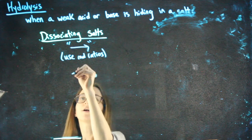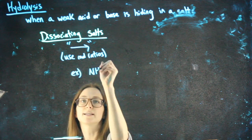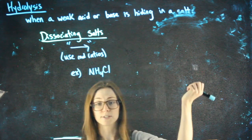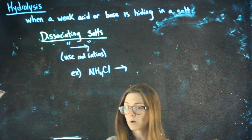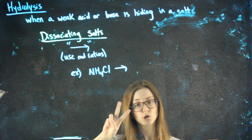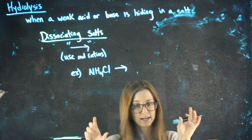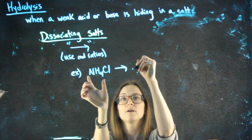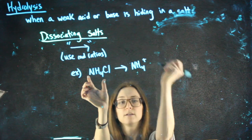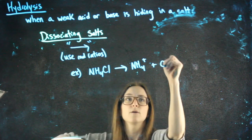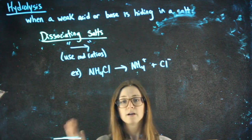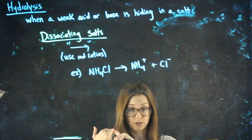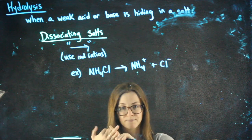So an example for you, NH4Cl, we already decided in this video was a salt. When I dissociate that salt, it's always just going to be into two pieces, two ions, a positive ion and a negative ion. So NH4 plus, that's a polyatomic ion, and Cl minus, which is a minus one ion, that's how I dissociate that salt. Okay. Now you're going to go try first identifying if things are salts or not, and then dissociating them.